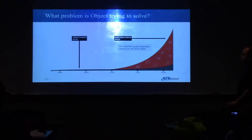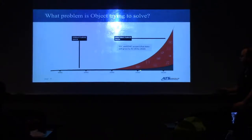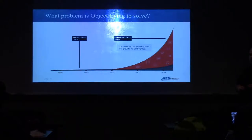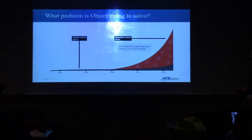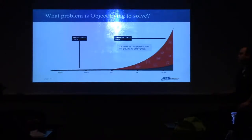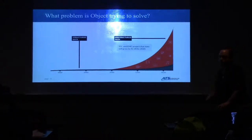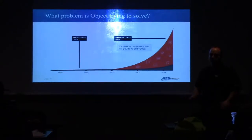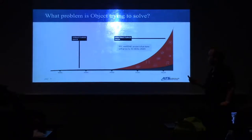So what problem is object storage trying to solve? As you can see from the 80s, 90s, 2000s, 2010s — structured data is growing, there's no doubt. Data is the new oil, as they say. But unstructured data is growing at explosive rates. That's the problem people are solving with object storage. One of the key characteristics is that it scales infinitely, which lends itself to this insane growth curve we're seeing.